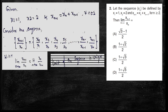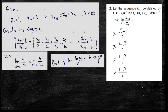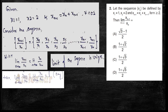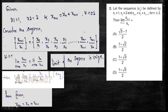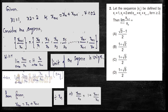We know that the limit of a sequence is unique. So the limit as n tends to infinity of x(n+1)/xn will be the same as the limit of xn/x(n-1). We know that limit as n tends to infinity of x(n+1)/xn equals xn/x(n-1). From x(n+1) equals xn plus x(n-1), we divide both sides by xn to get x(n+1)/xn equals 1 plus x(n-1)/xn.